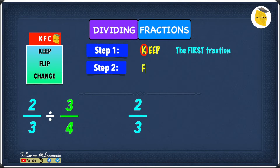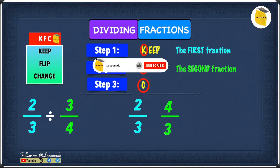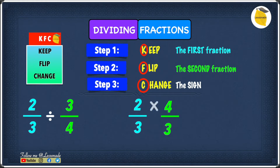Step two is F — flip the second fraction, which is 3 over 4. Now it becomes 4 over 3. Then the final step, step three, is C — change the sign. The sign we have right now is division, so we change it into multiplication.